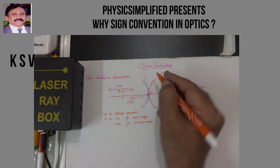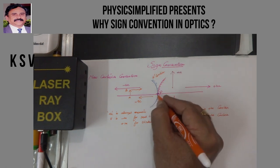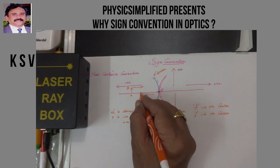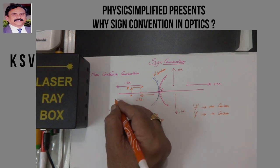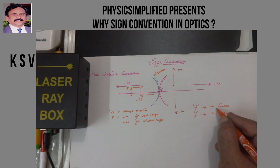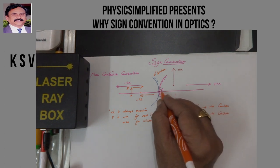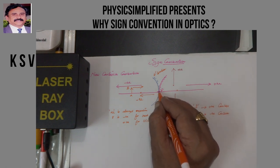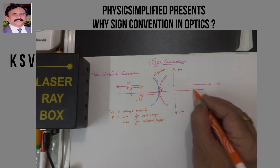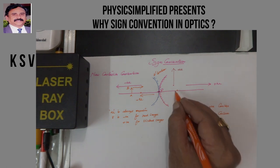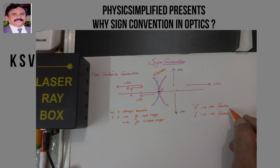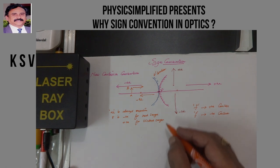For a concave surface, the focal length and radius of curvature are measured from the pole to F in the opposite direction of the light — therefore it is negative. For a convex surface, the focus is measured from P to F in the direction of light — therefore it is positive. So F is positive for convex surfaces and F is negative for concave surfaces.